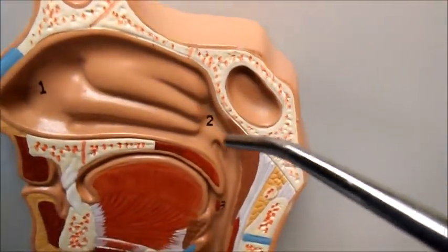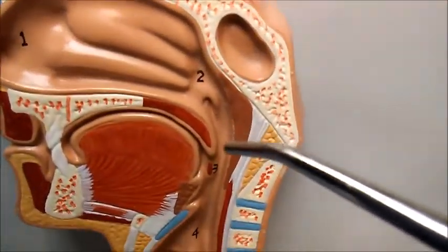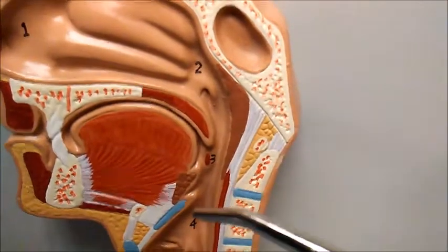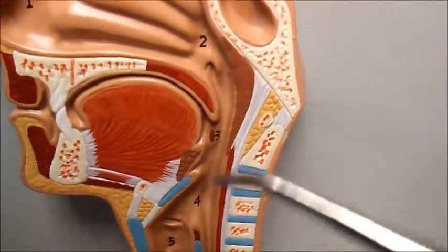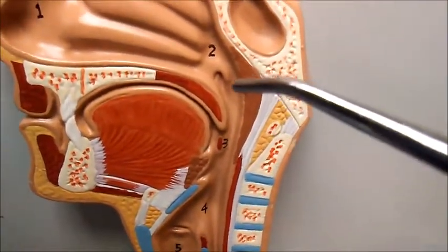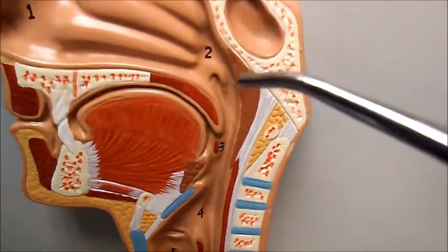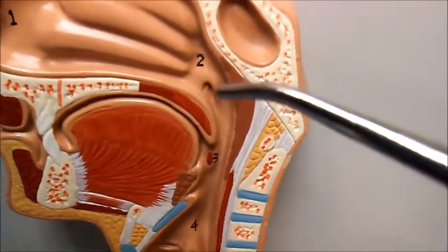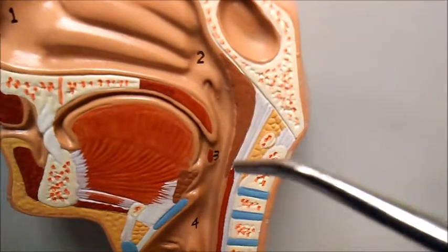The air then will pass down into the pharynx, and the pharynx is divided into three areas: the nasopharynx, the oropharynx, and the laryngopharynx.